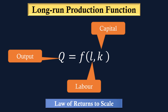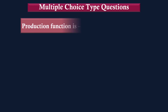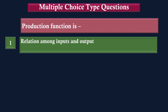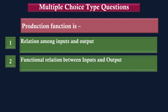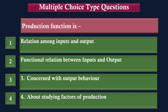Our discussion ends here. Multiple choice type questions. Production function is: 1. Relation among inputs and output. 2. Functional relation between inputs and output. 3. Concerned with output behaviour. 4. About studying factors of production. The correct answer is 2.